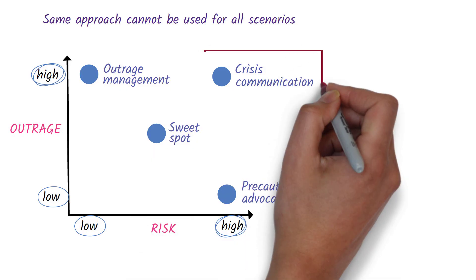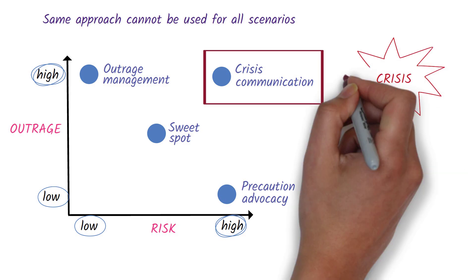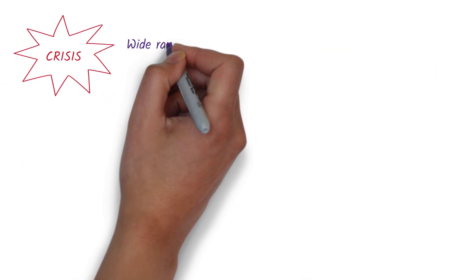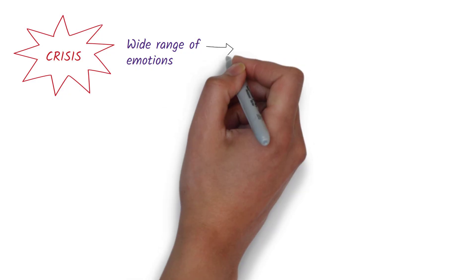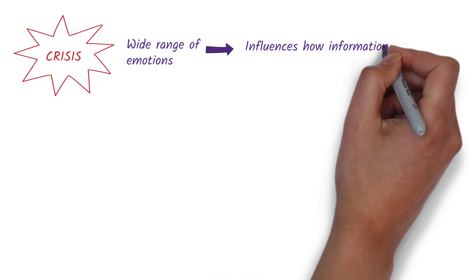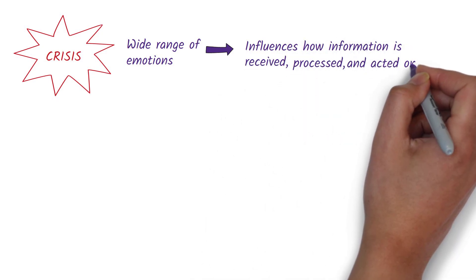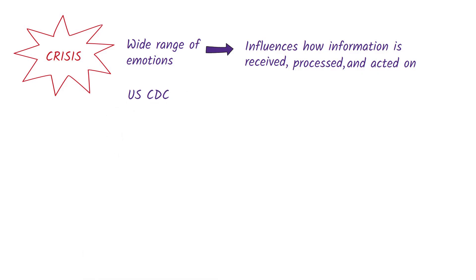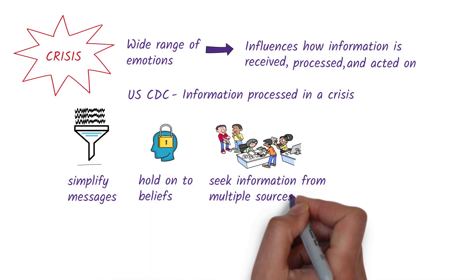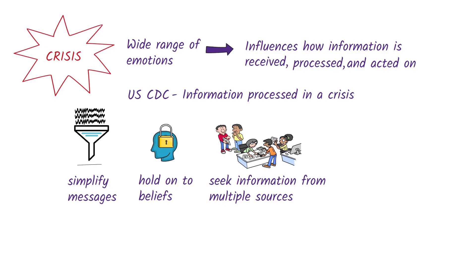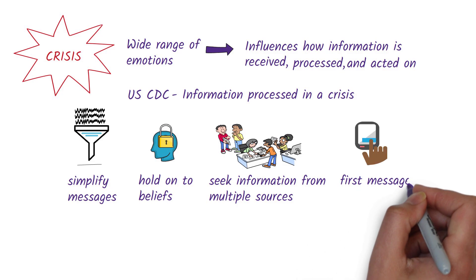Let's focus on crisis communication. In a crisis, people experience a wide range of emotions, such as stress, fear, loss, helplessness, and uncertainty. This can influence how information is received, processed, and acted on. The United States Centers for Disease Control and Prevention outlines several key ways in which information is processed during a crisis: we tend to simplify messages, hold on to current beliefs, seek additional information from multiple sources such as friends, family, and social media, and often the first message we hear is the one that's believed.